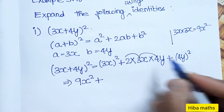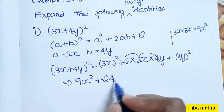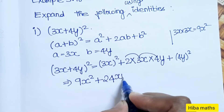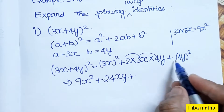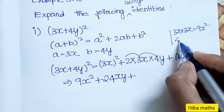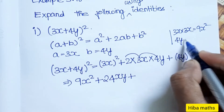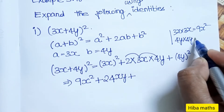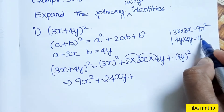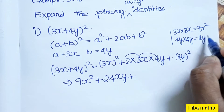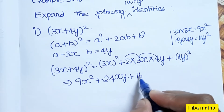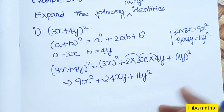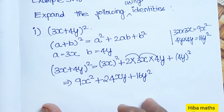9x squared plus 2 into 3 into 4 equals 24xy, plus (4y)² which is 4y into 4y — 4 fours are 16, so 16y squared. So the final answer is 9x² + 24xy + 16y².